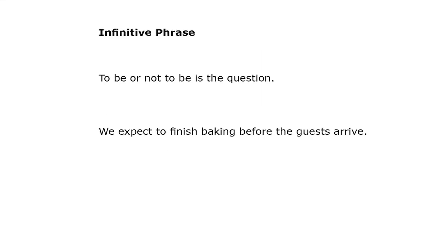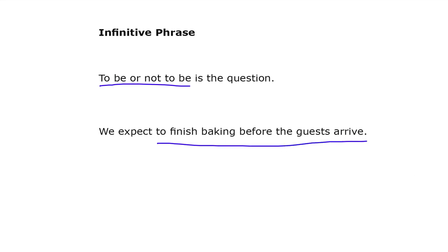An infinitive phrase is a series of words that begins with an infinitive, and it behaves just like an infinitive. For example, 'To be or not to be is the question.' The phrase 'to be or not to be' is an infinitive phrase and it is the subject of the sentence — notice the verb is 'is.' In another example, the infinitive phrase is the object of the verb 'expect': 'We expect to finish baking before the guests arrive.' The infinitive phrase is 'to finish baking before the guests arrive.'